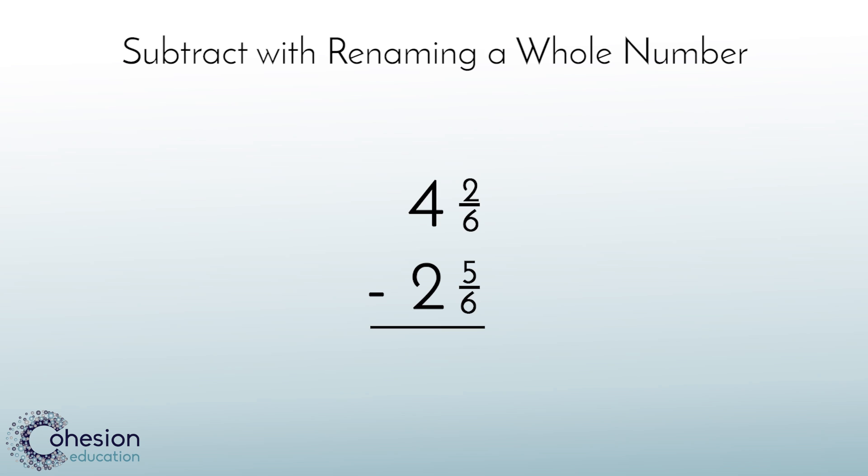Starting in the fractions column, the problem is asking us to do 2 sixths minus 5 sixths. We cannot subtract 5 sixths from 2 sixths because 5 sixths is greater. Arriving at this point is unsettling for students, as they are used to subtracting mixed numbers where everything just works out easily and smoothly.